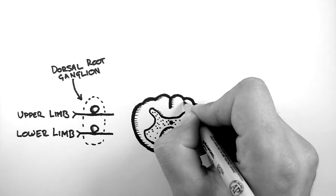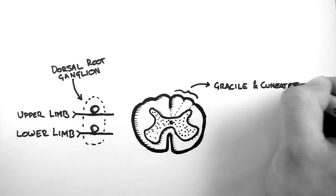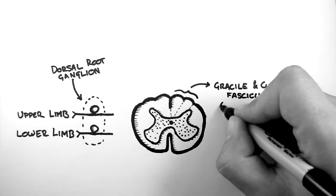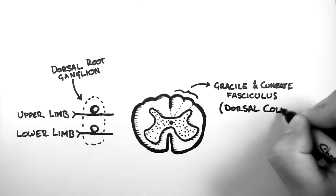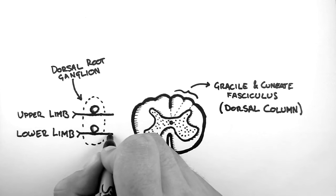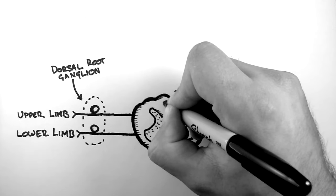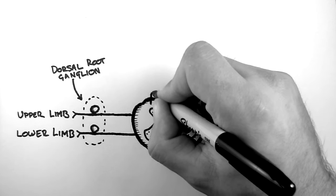Here is a cross section of the spinal cord and here we have our cuneate and gracile fasciculi. Again, this is known as the dorsal column. The axon from the lower limb travels up through the gracile fasciculus and the axon from the upper limb ascends via the cuneate fasciculus.